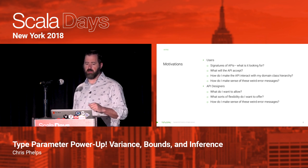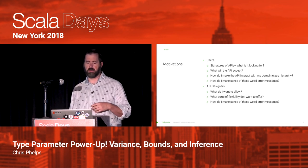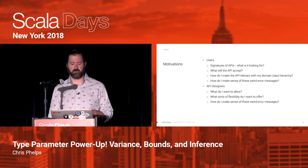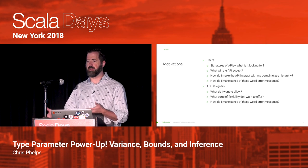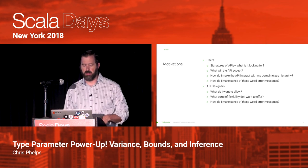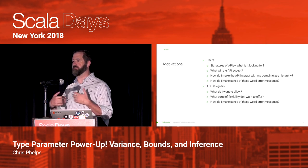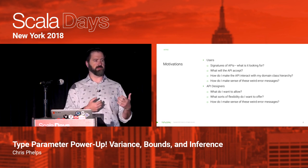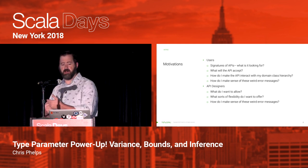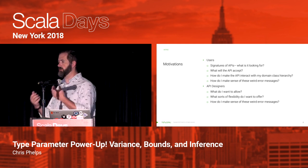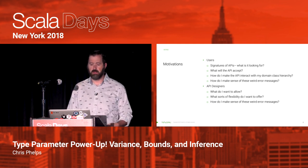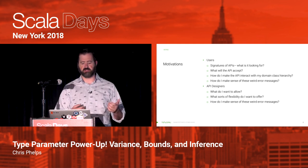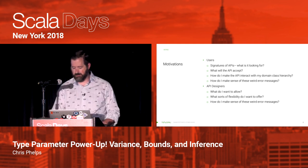So the motivations for this talk: for users of APIs, you want to be able to understand signatures when you look at Scala docs. You want to understand what does that API accept, what can I pass to it, how do I make it interact with the stuff in my code base, and how do I make sense of all those weird error messages? And as an API designer, you want to think about what you're going to allow your users to pass to you, what sort of flexibility you want to offer, and occasionally you too run into these weird error messages.